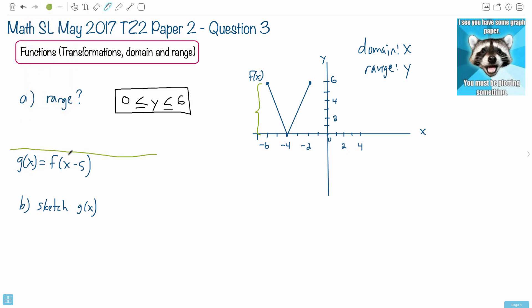We're told that g of x is made by doing this, f of x minus five. And it helps to recognize that this is a transformation of a function.